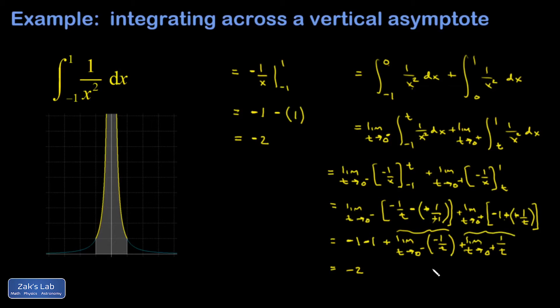If t is approaching 0 from the left, it means it's a negative number, which means negative 1 over t is a positive number. As I get closer and closer to dividing by 0, it's becoming infinite. So that's plus infinity. The second limit, t approaches 0 from the right, 1 over t is positive. That's another plus infinity. Infinity plus infinity is infinity, and infinity minus 2 is infinity.